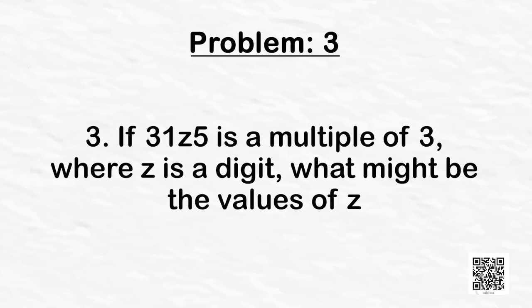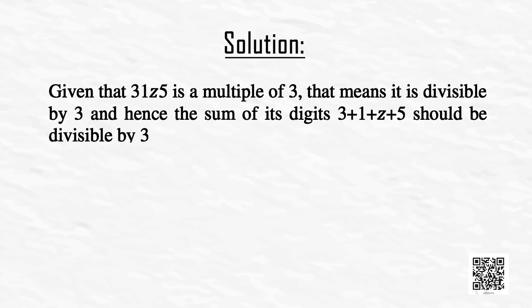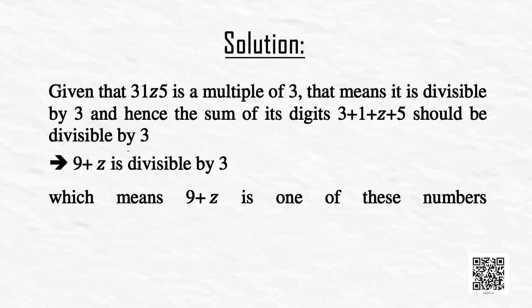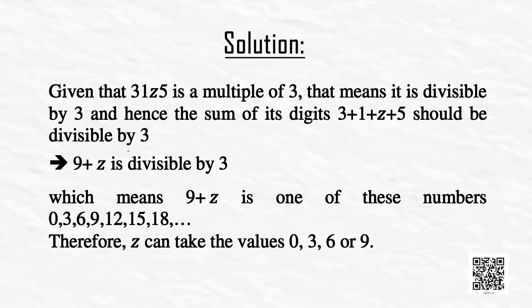Let's look at another problem: if 31z5 is a multiple of 3 where z is a digit, what might be the values of z? It is given that 31z5 is divisible by 3, so the sum of its digits 3 + 1 + z + 5 = 9 + z should be divisible by 3. This means 9 + z is one of 0, 3, 6, 9, 12, 15, 18... Since z is a digit between 0 and 9, z can take the values 0, 3, 6, or 9.